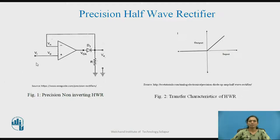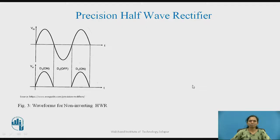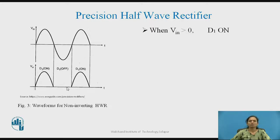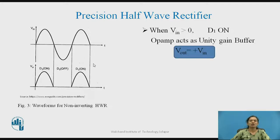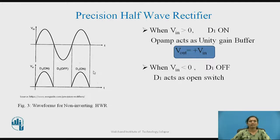In the negative half cycle, the diode will not conduct as the negative signal is at the positive terminal of the op-amp. Diode D1 will be reverse biased and therefore we get 0 voltage at the output. During the positive half cycle, as D1 conducts, the output equals the input signal. During the negative half cycle, D1 does not conduct, so the output is 0. The equation is V_out = +V_in, and the op-amp acts as a unity gain buffer.